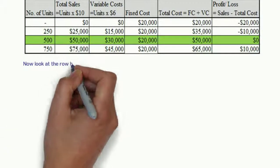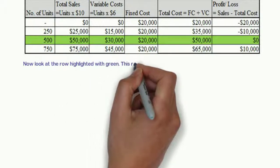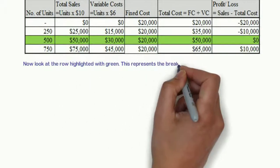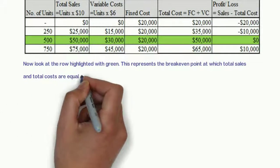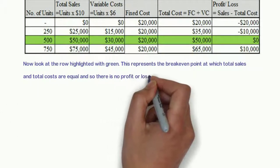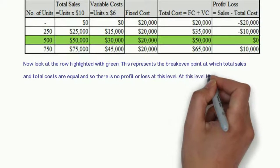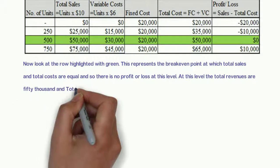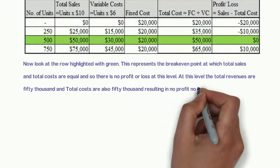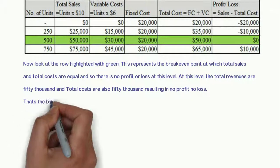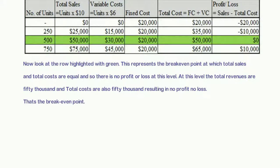Now look at the row highlighted with green. This represents the breakeven point at which total sales and total costs are equal and so there is no profit or loss at this level. At this level the total revenues are $50,000 and total costs are also $50,000 resulting in no profit, no loss. That's the breakeven point.